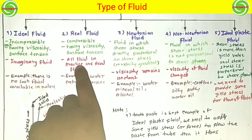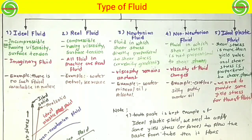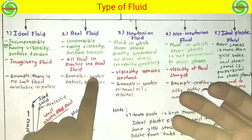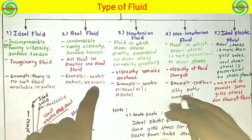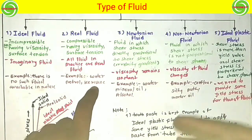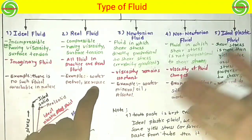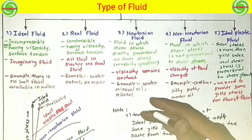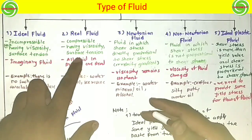All fluids in practice are real fluids. Whatever types of fluids we are using or are available in nature, all are real fluids. Examples of real fluid are water, petrol, and other liquids having viscosity and surface tension — all come under the real fluid category. Real fluid is compressible and has viscosity and surface tension.